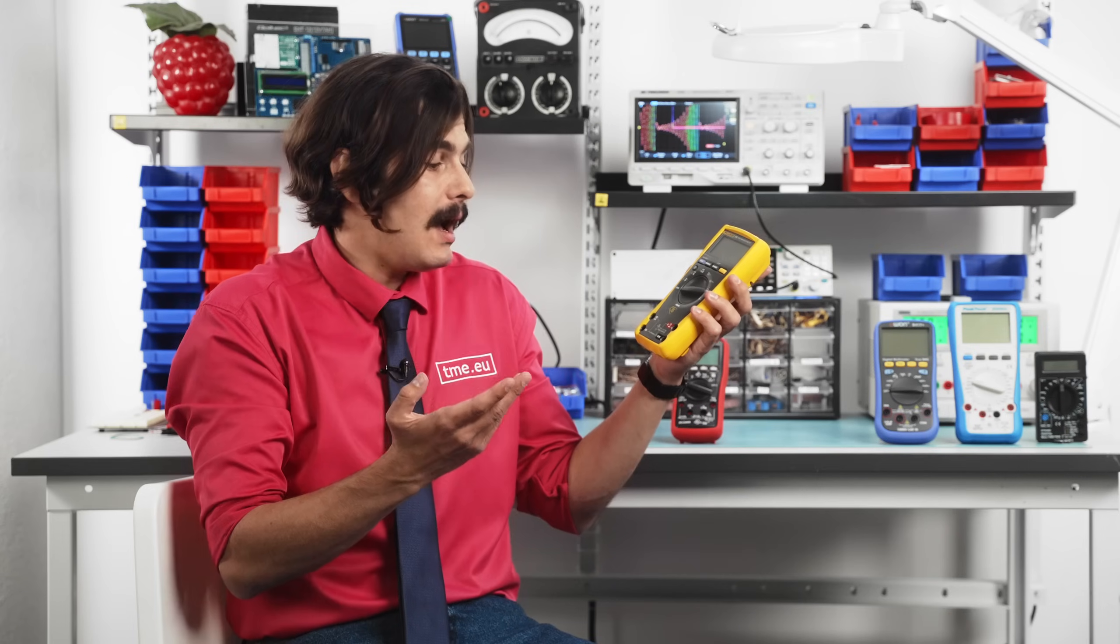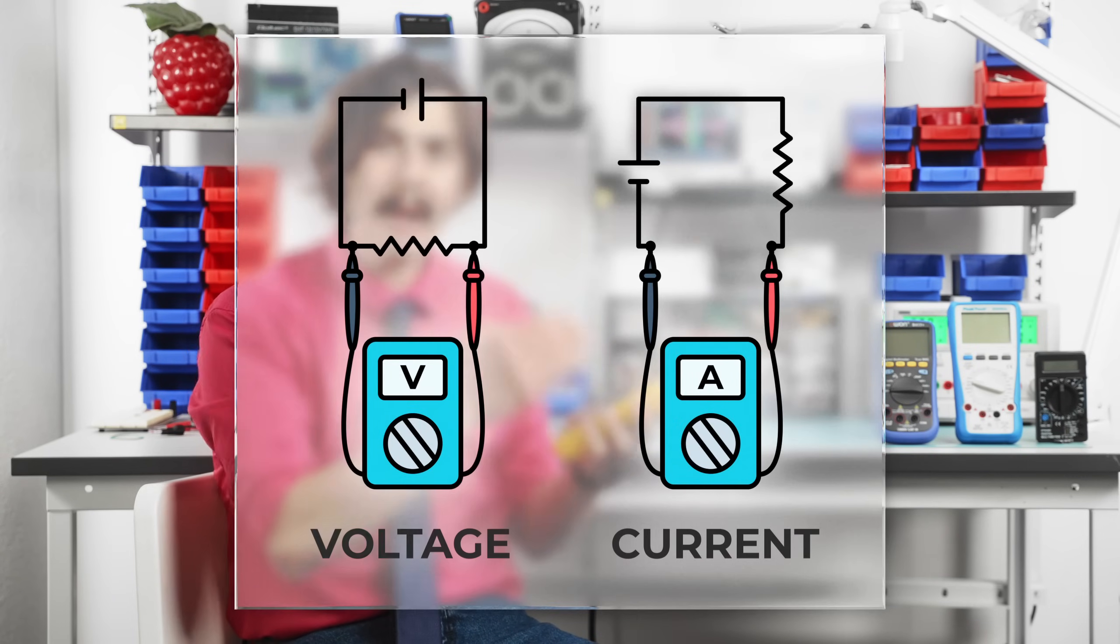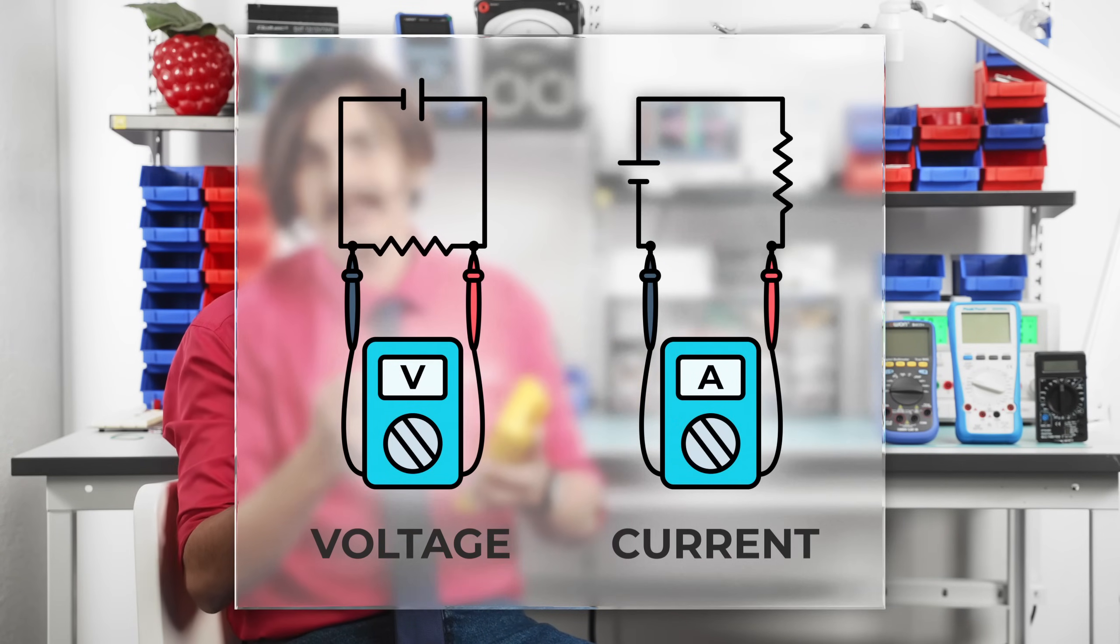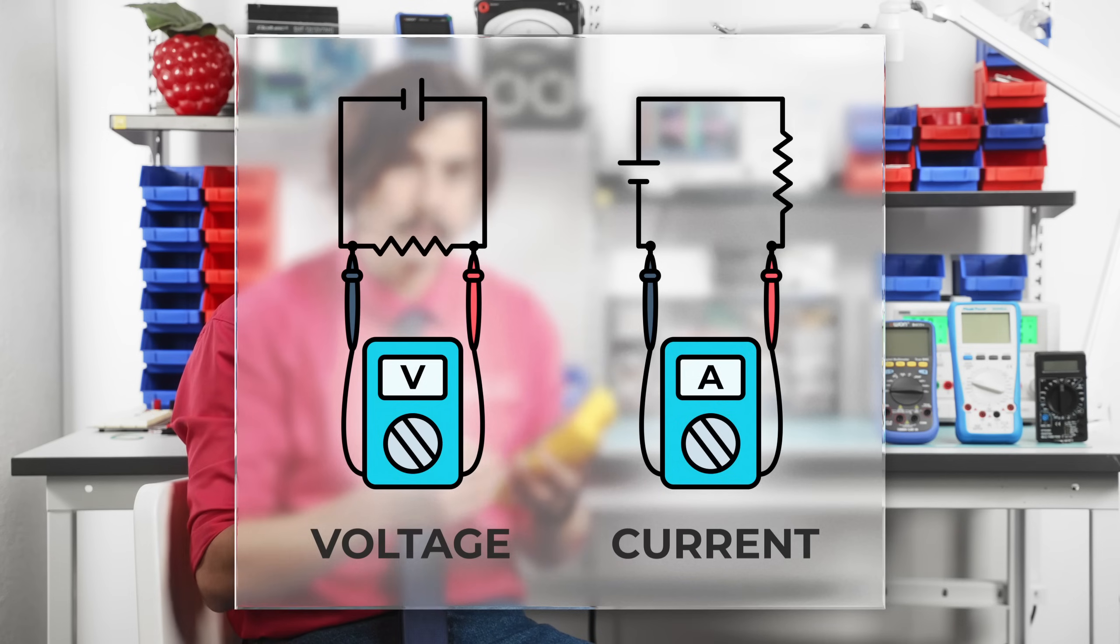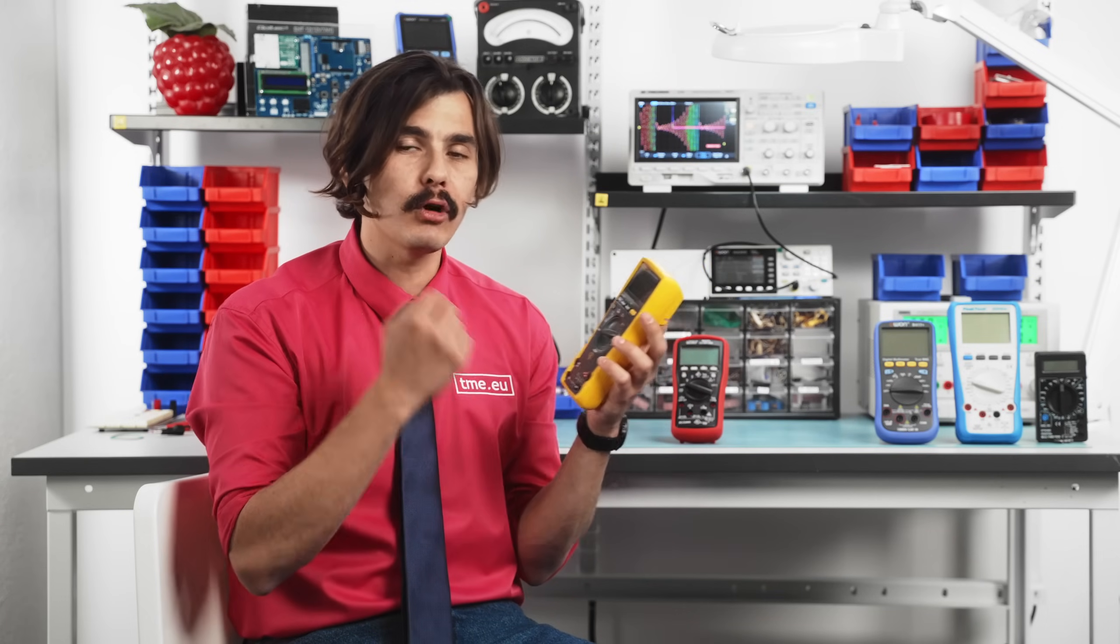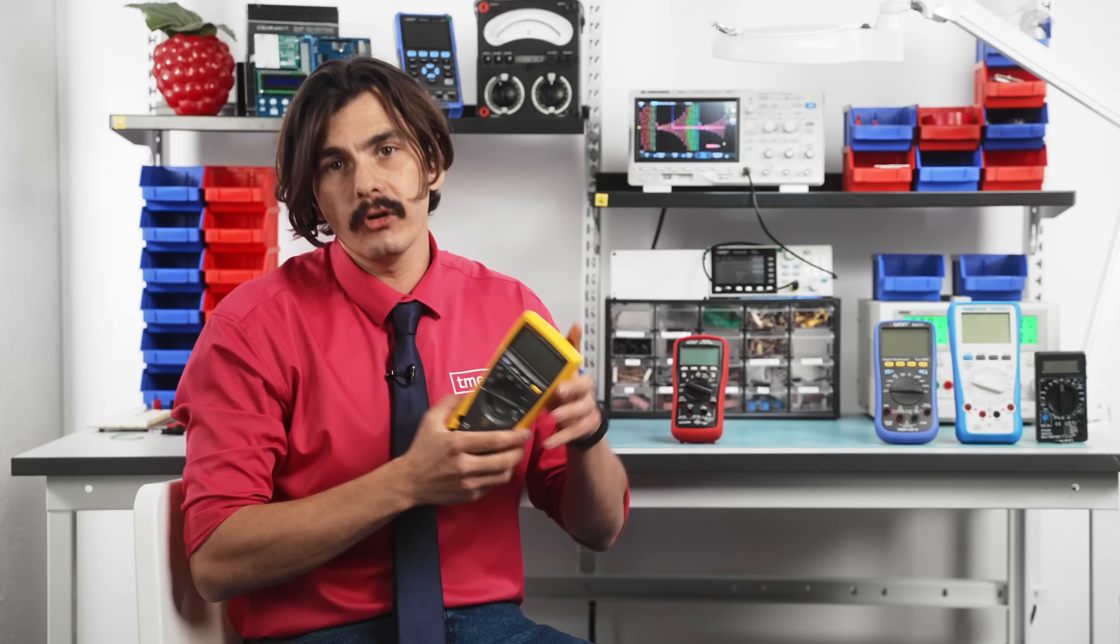Voltage and current are measured differently. Voltage is measured in parallel with the load, and current is measured in series with the load. The load refers to any device drawing power from the source, like a lamp, a toaster, an oven, or a hairdryer.